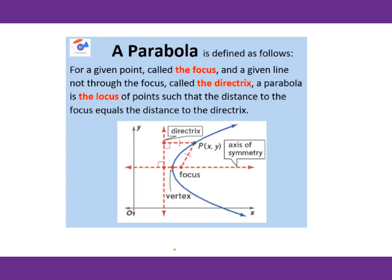A parabola is defined as follows: for a given point called the focus, and a given line not through the focus called the directrix, a parabola is the locus of points such that the distance to the focus equals the distance to the directrix. For any point on the parabola, the distance to the focus, labeled d1, equals the distance to the directrix, labeled d2. So d1 always equals d2.